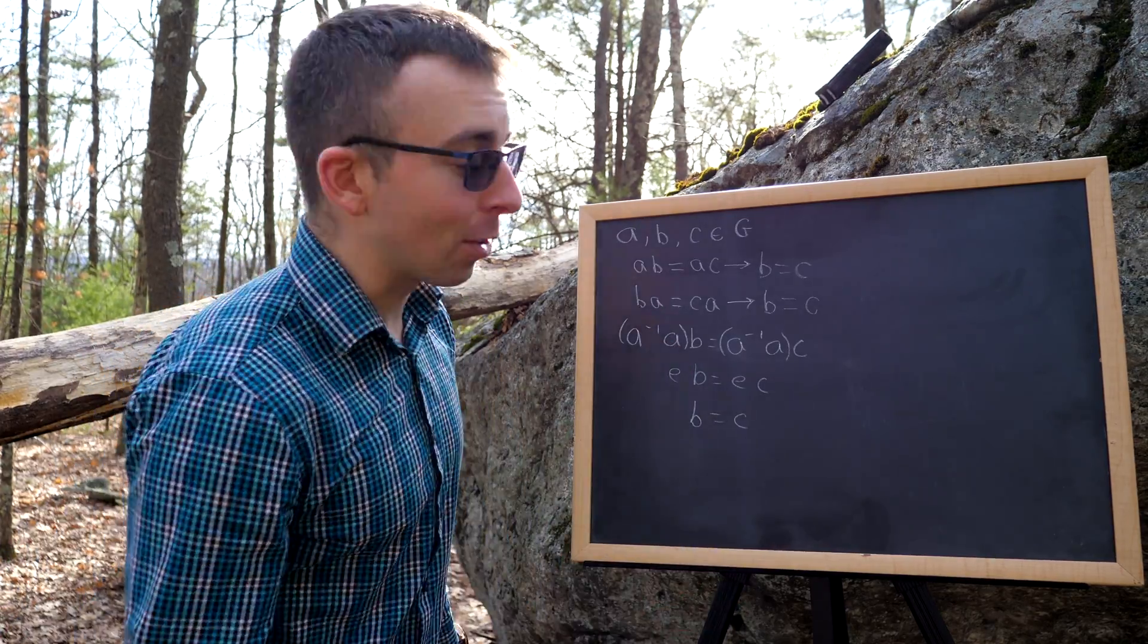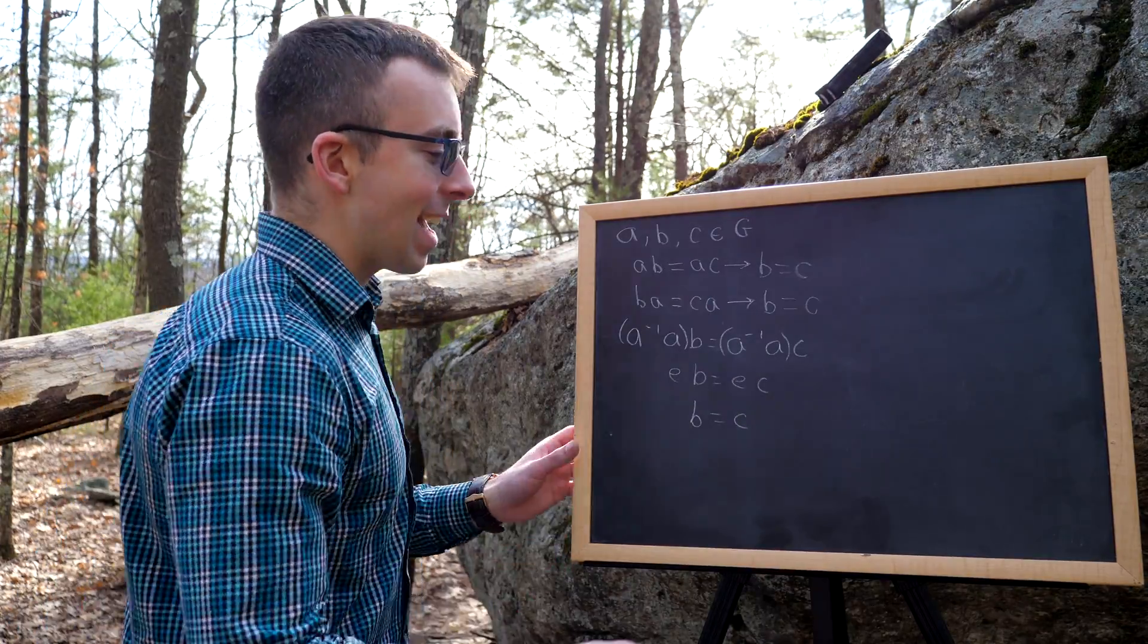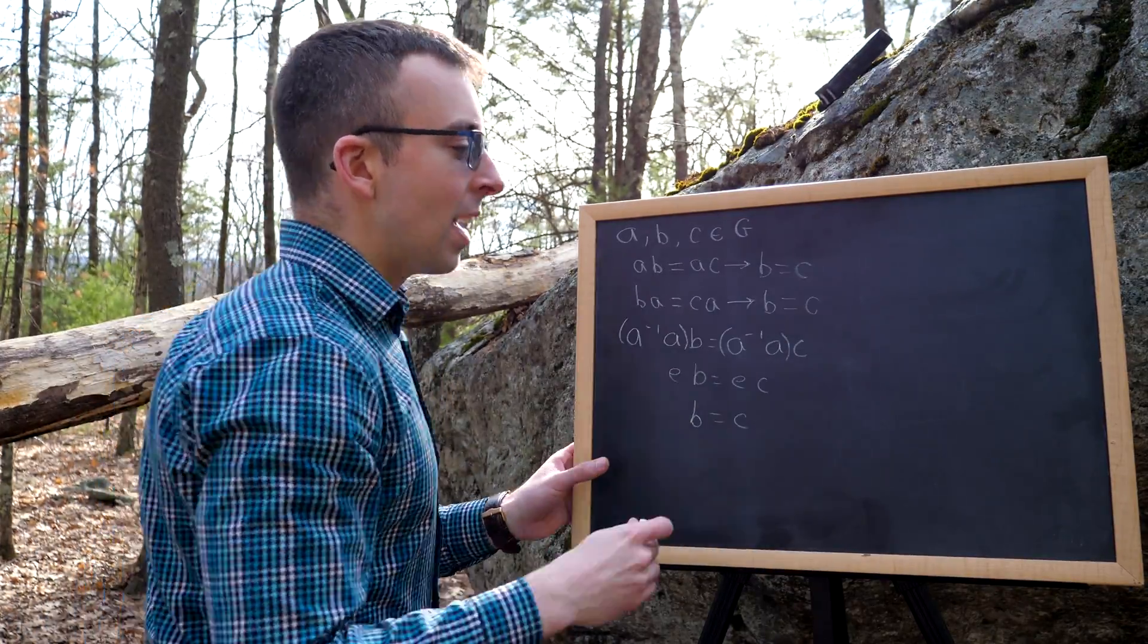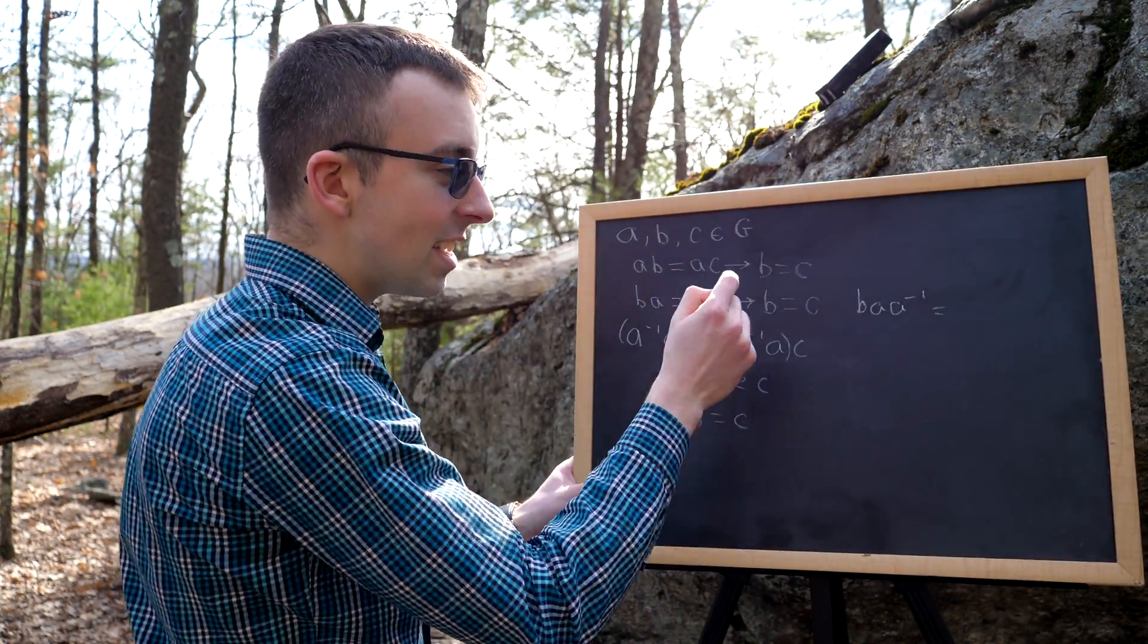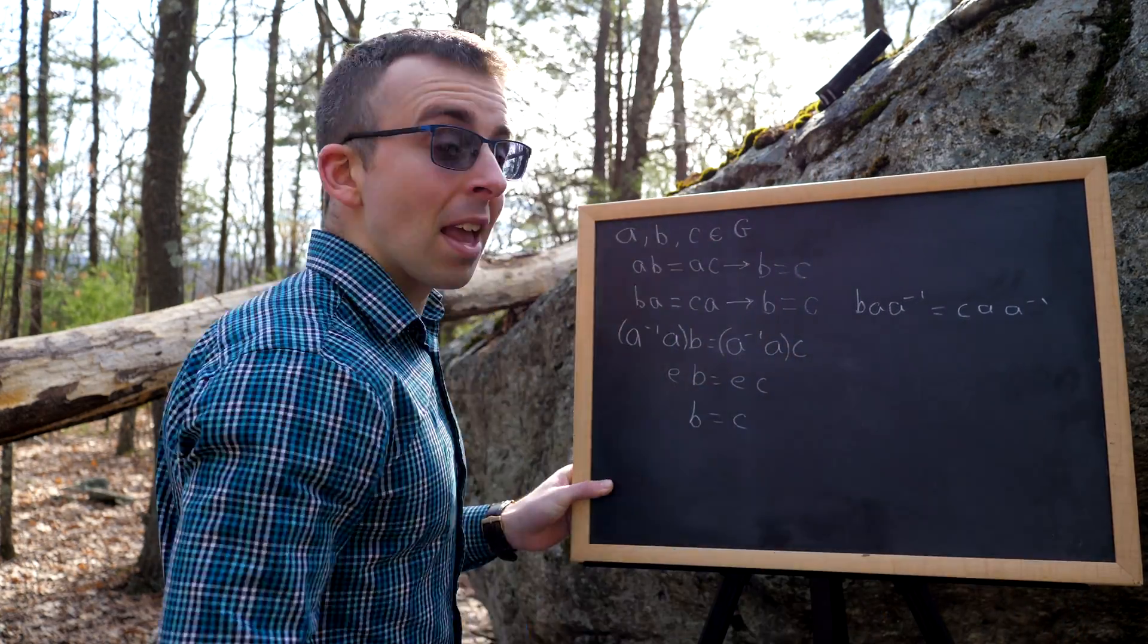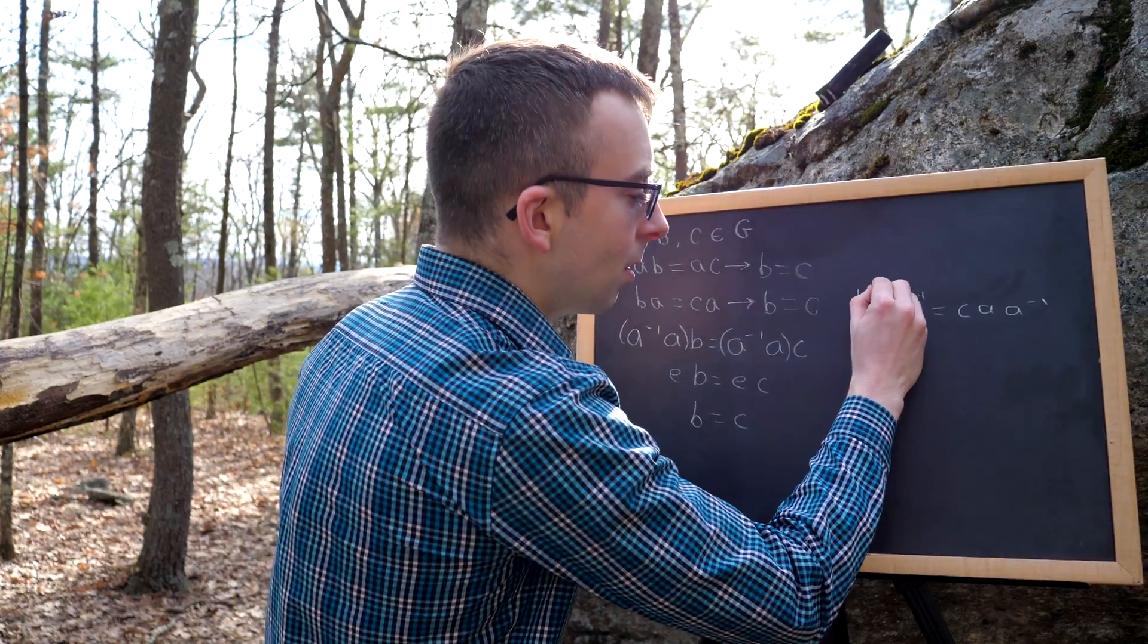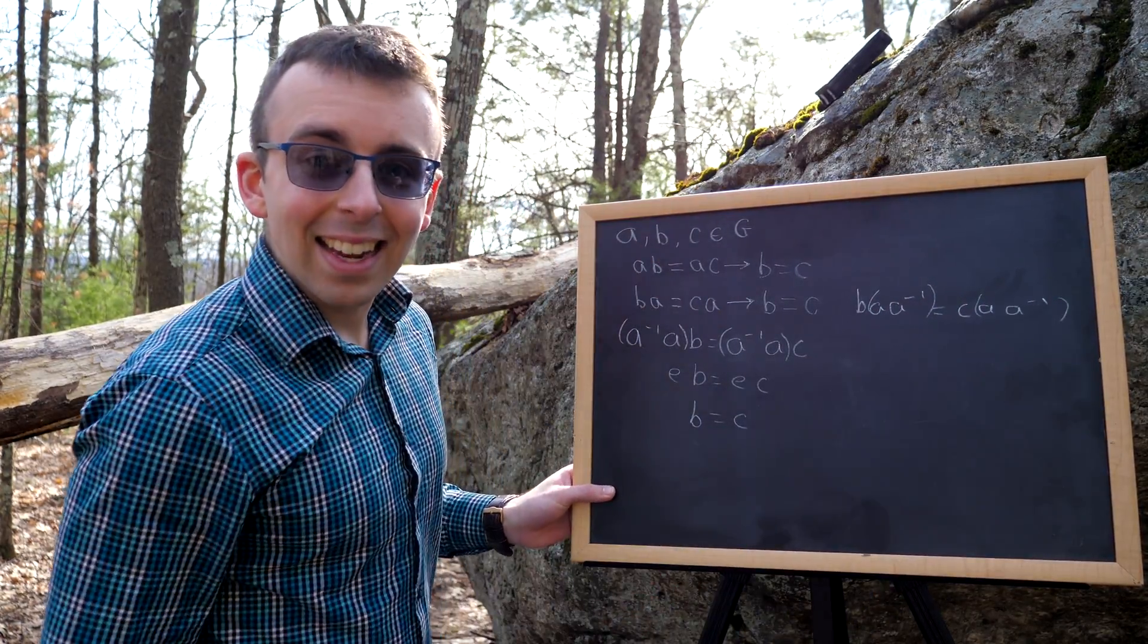So again, we know we got inverse elements, so we'll multiply both sides of the equation on the right by A inverse. That's this equation here. Now if we do that, we get that BA times A inverse equals CA times A inverse. Again, we can use associativity to associate A with A inverse. Those will produce the identity elements,